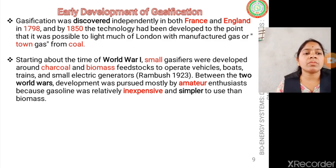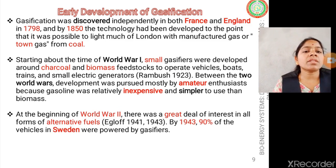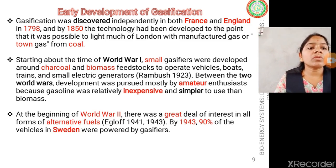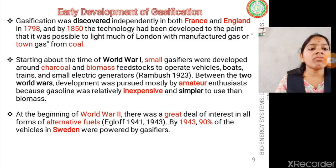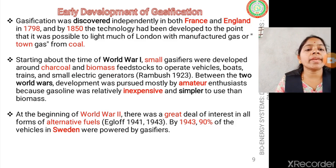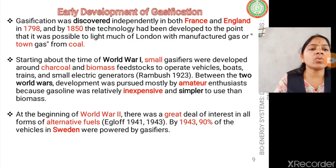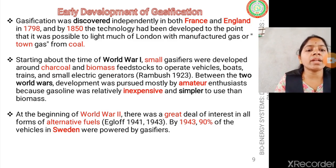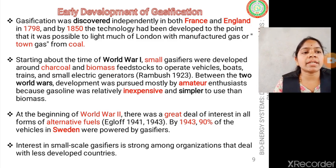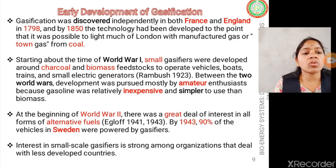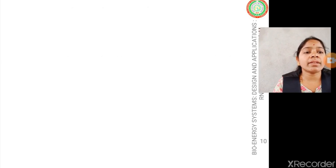Between the two world wars, tremendous scope and emphasis was given to developing gasifier-based producer gas, as it was inexpensive, simpler, and easily available due to the gasoline scarcity crisis. At the beginning of World War II, there was great scarcity of alternative fuels. By 1943, Sweden — a frontier country in adopting gasifier-based technology — had 90% of its vehicles powered by gasifiers, using this technology to run vehicles of all sizes.